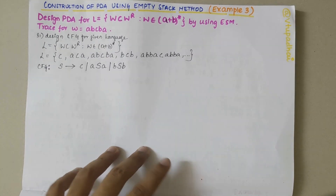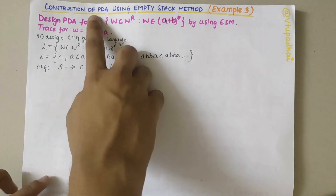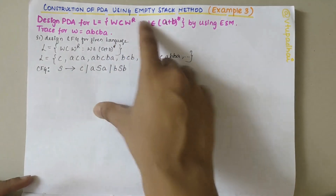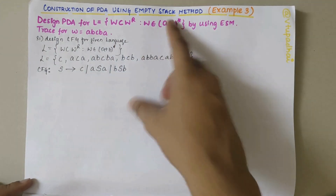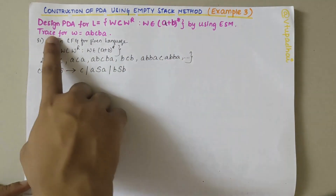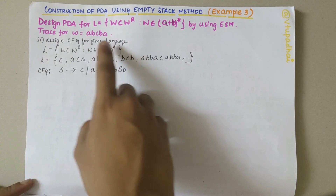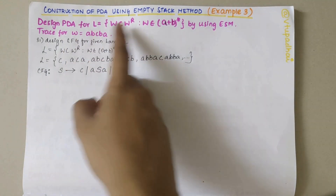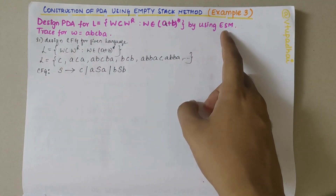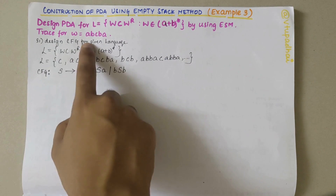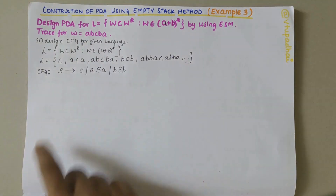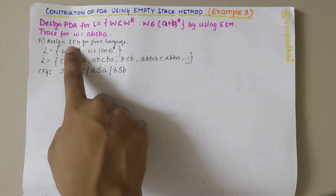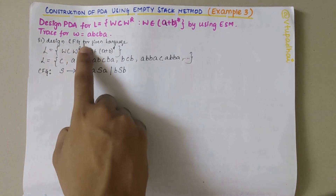In this video we'll be looking into construction of the PDA using MTStack (empty stack) method. This is the third example. The problem statement says that we need to design a PDA for the given language by using MTStack method and trace for the given string. My first step would be to design the context-free grammar for the given language.